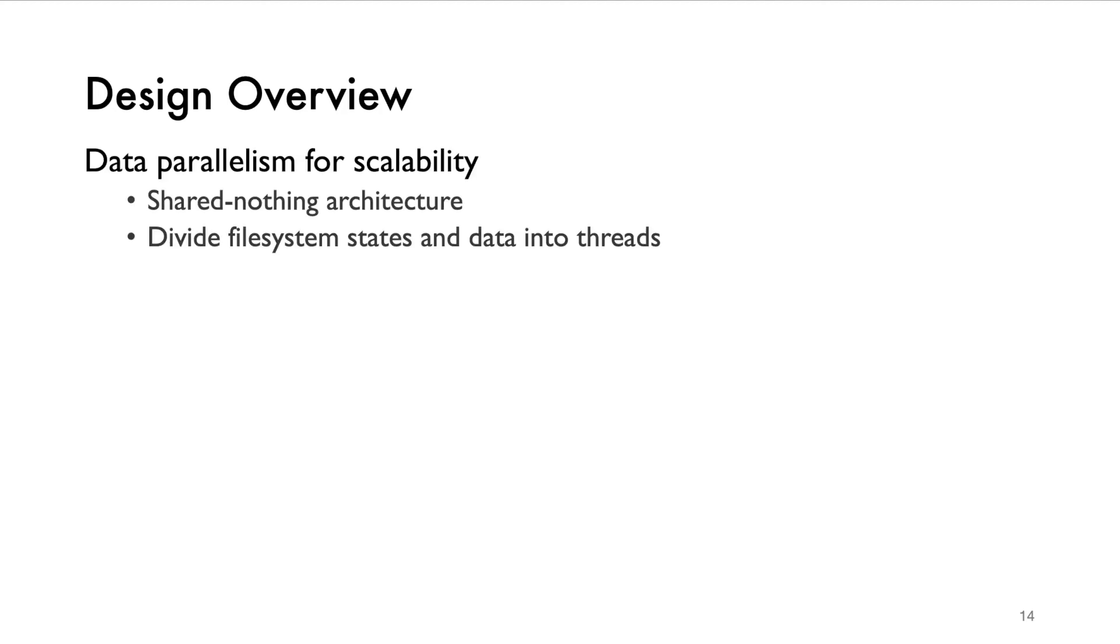To realize the high-performance and scalable semi-micro-kernel, UFS addresses several key problems with its design. First, for the scalability goal, we adopt a shared-nothing architecture to boost data parallelism. UFS divides file system states and data into threads. The natural question is what's the granularity? We choose inode such that to support this data parallelism, we introduce runtime inode ownership.